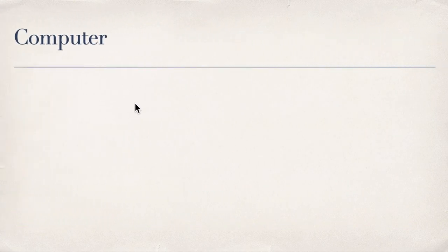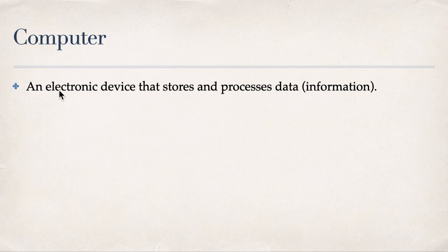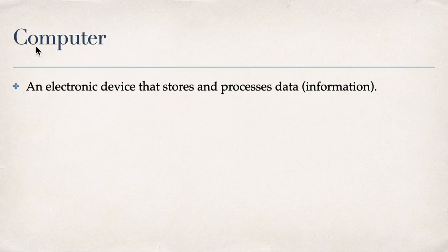So what is a computer? A computer is an electronic device that stores and processes data or information. Historically, before electronic devices existed, when we say 'computer,' we think of it as a human person — the one that computes.